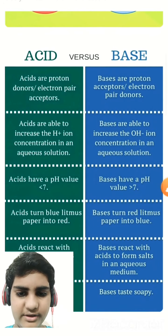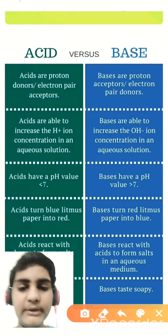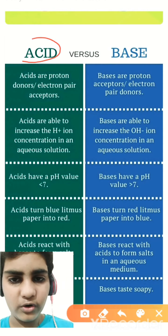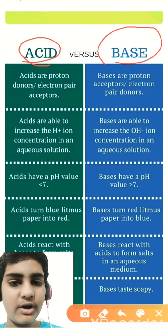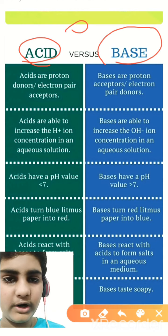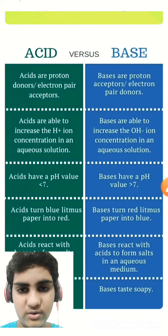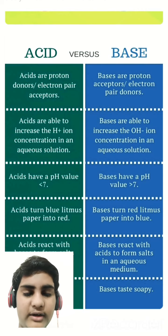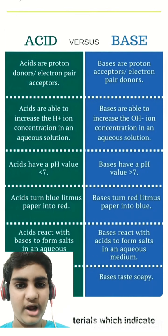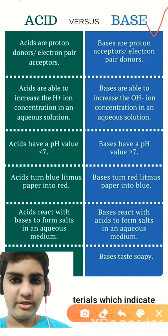Acids are proton donors and electron pair acceptors — acids donate a proton to a base and can gain electrons. Bases are proton acceptors, meaning bases accept the proton that the acid donates. This concept is very straightforward.